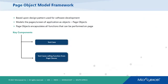Next is the page object model. As the name suggests, the page object model is implemented in applications where you can divide your application into different pages. I'll take an example of an e-commerce application: you could have a login screen, a shopping page, a cart page, a payment page, and then an order page.